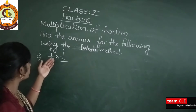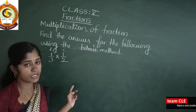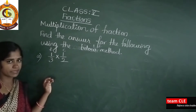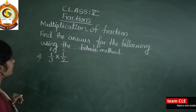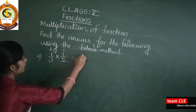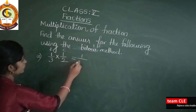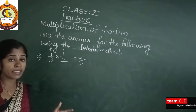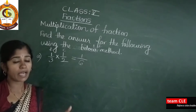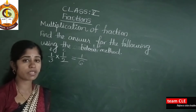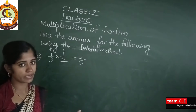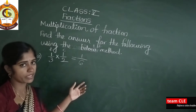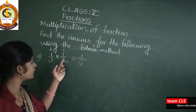So here we have 1/3 into 1/2 and we need to multiply this. 1 times 1 is 1, and 3 times 2 is 6. So the answer is 1/6. When you are subtracting, you only subtract the numerator. But here you need to multiply the numerator and the denominator both.